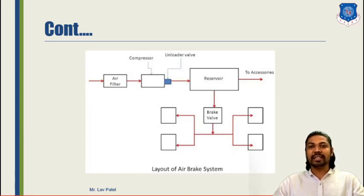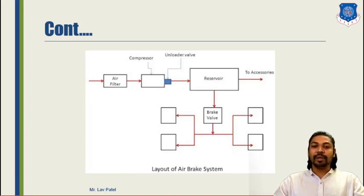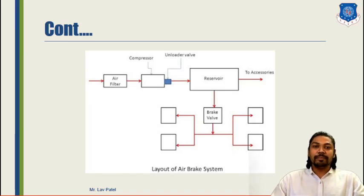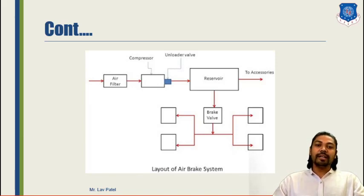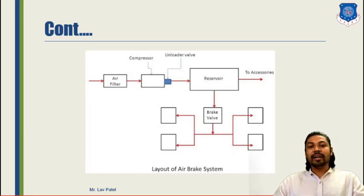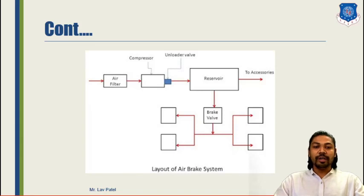At a certain limiting pressure, the unloader valve lifts or opens, and the compressed air is transported to the reservoir tank. If the compressed air pressure is reduced, the unloader valve closes again and the compressor runs until it reaches its predefined pressure. After the reservoir, some pressurized air is used for operating accessories, while the majority goes to the brake valve. With the help of the brake valve, the caliper is operated and the brake is applied — this is the main working principle of the pneumatic braking system.